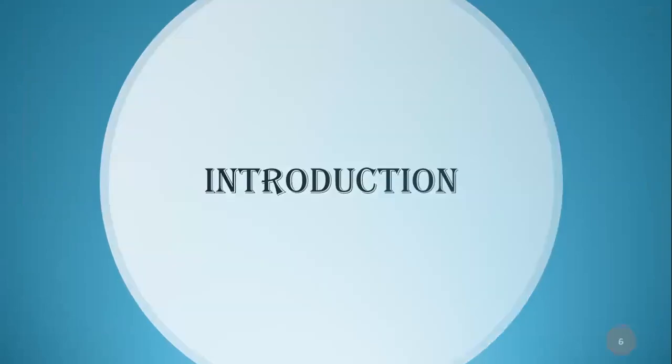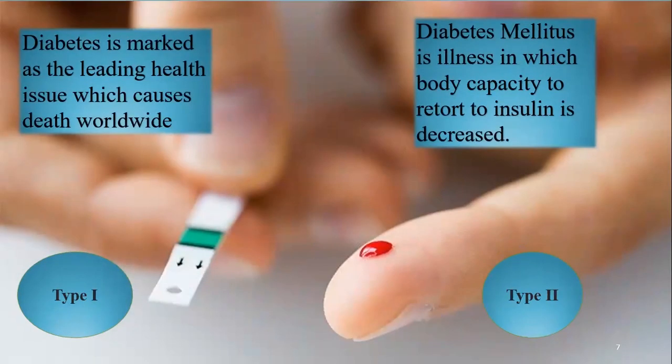Moving to the introduction: diabetes is a frequent endocrine disorder characterized by rising blood sugar levels. The most frequent illnesses due to diabetes include retinopathy, neuropathy, nephropathy, and cardiomyopathy. Diabetes is marked as a leading health issue causing death worldwide.